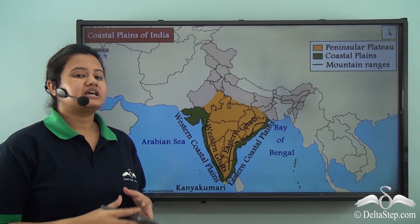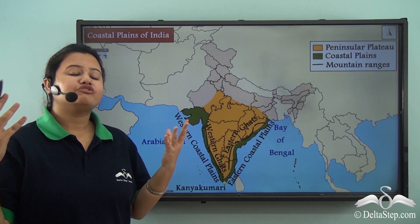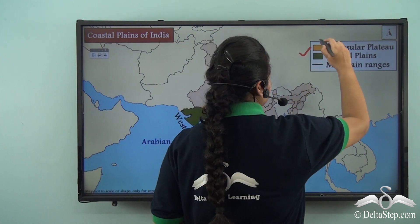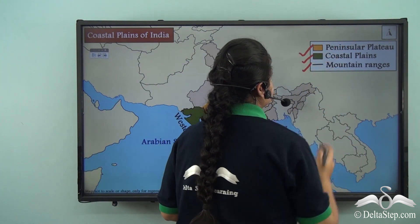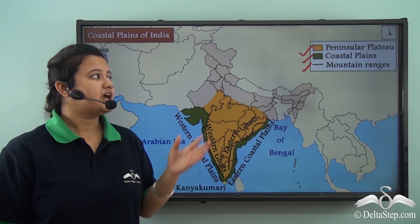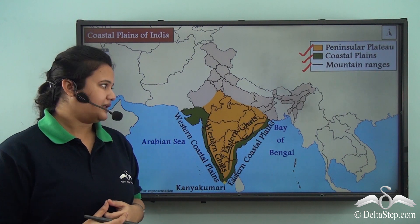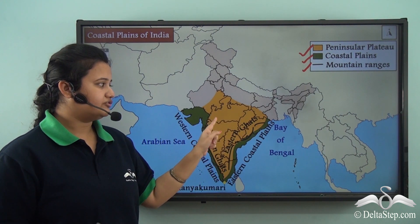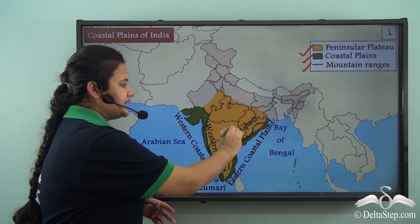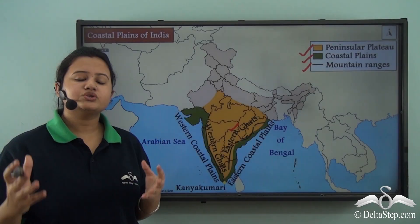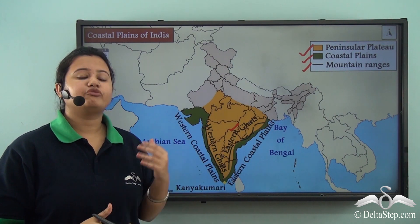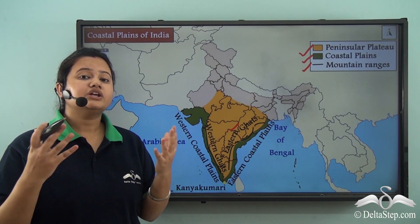This map shows some of the major physiographic divisions of Peninsular India, like Peninsular Plateau, Coastal Plains, and the mountain ranges of Southern India. Now, in our previous two lessons, we have vividly talked about the Peninsular Plateau. This plateau forms the central and southern part of India and the region is bounded by Western Ghats on its western sides and Eastern Ghats on its eastern sides. In today's lesson, we shall be discussing about another major physical feature of Peninsular India — that is the Coastal Plains.